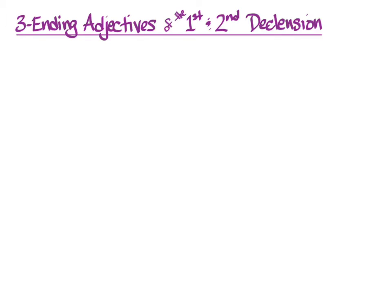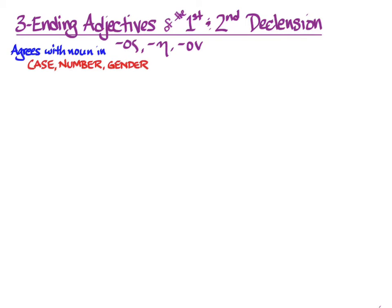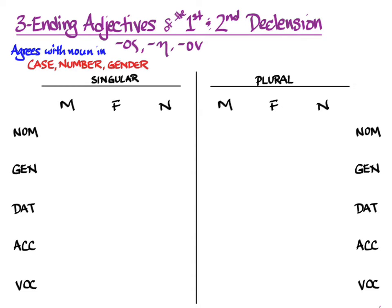We're going to do two sorts of Greek adjectives in this video. The first sort have different sets of endings for the masculine, the feminine, and the neuter, and so they're called three-ending adjectives. In the nominative, those endings are os, a, and on — so sometimes I'll call these os/a/on adjectives. And why would they have to come in all three genders? Because just like the article, an adjective agrees with its noun in case, number, and gender every single time. So that means we need endings for all the genders, all the cases, and both singular and plural.